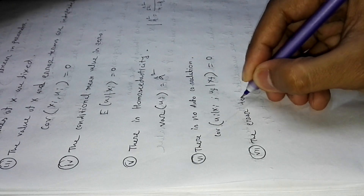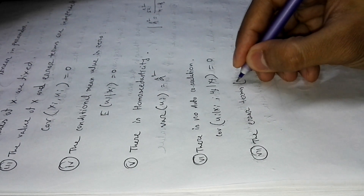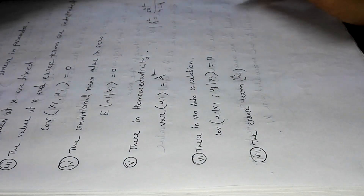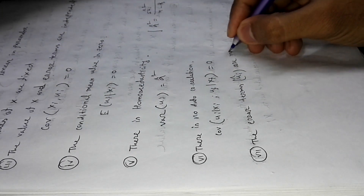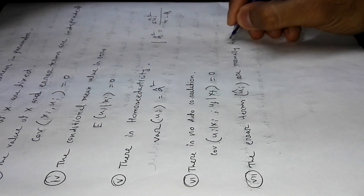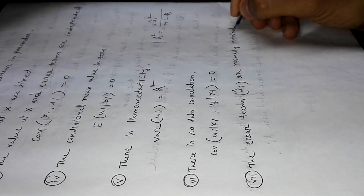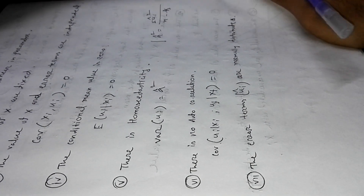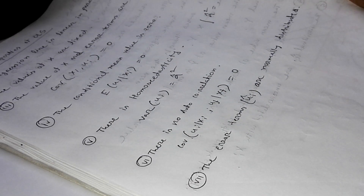The seventh property is that the error terms — that is, ui — are normally distributed.